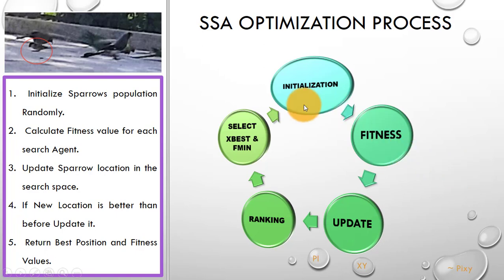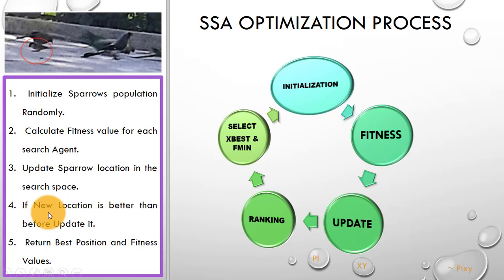Here we will initialize the population for the search agents randomly. After that we will compute the fitness value for each search agent, and according to their fitness value we will select the best search agent. After that we will update their positions in the search space, and we will check if the new position is better than before — then we will update it. Again we will compute the fitness value, and after that we will select the best position and fitness value.